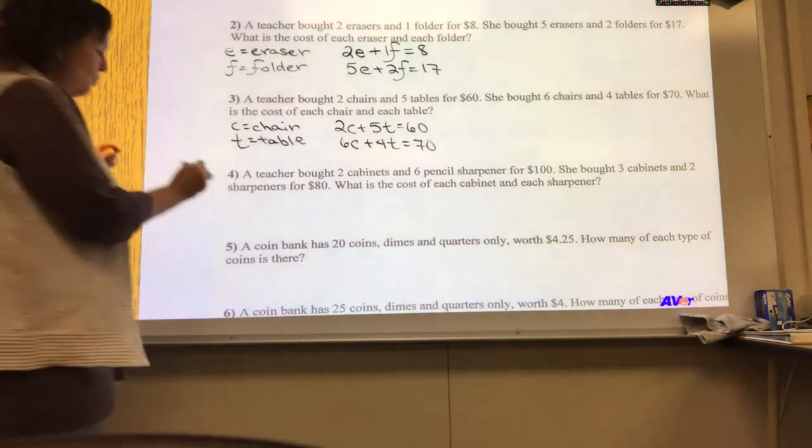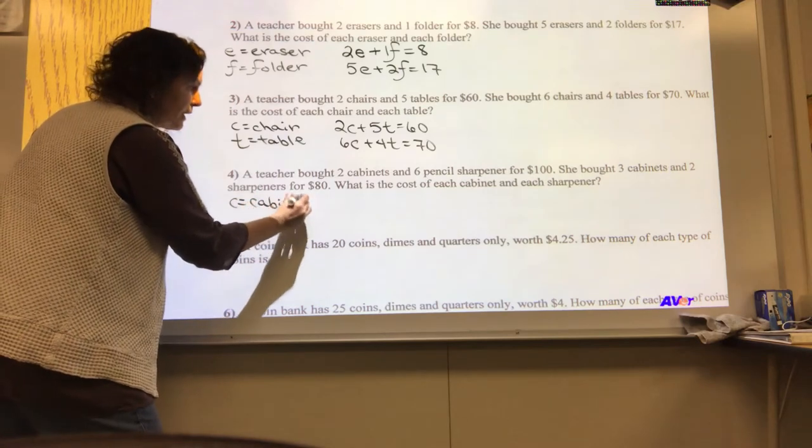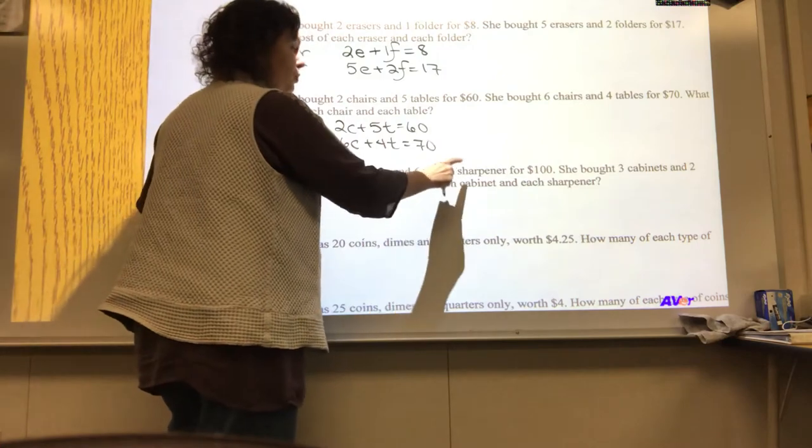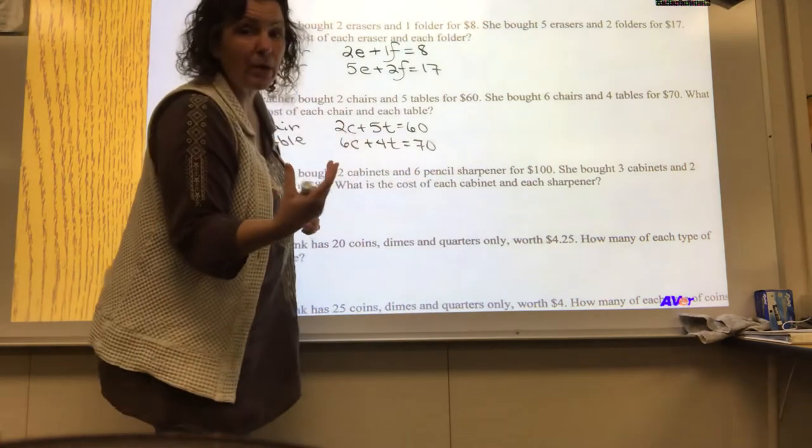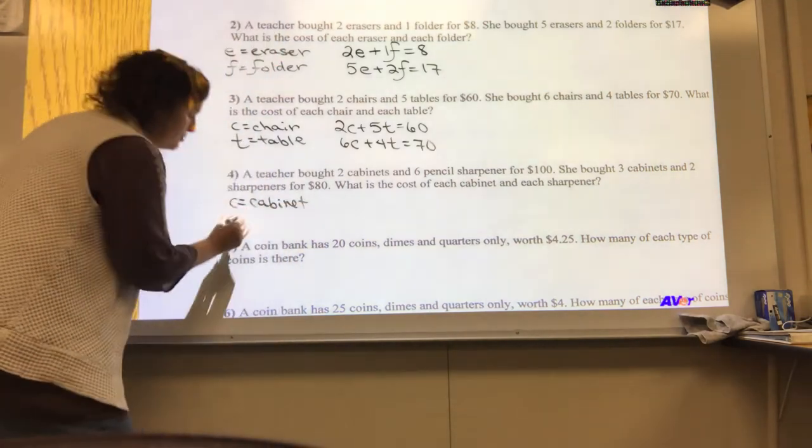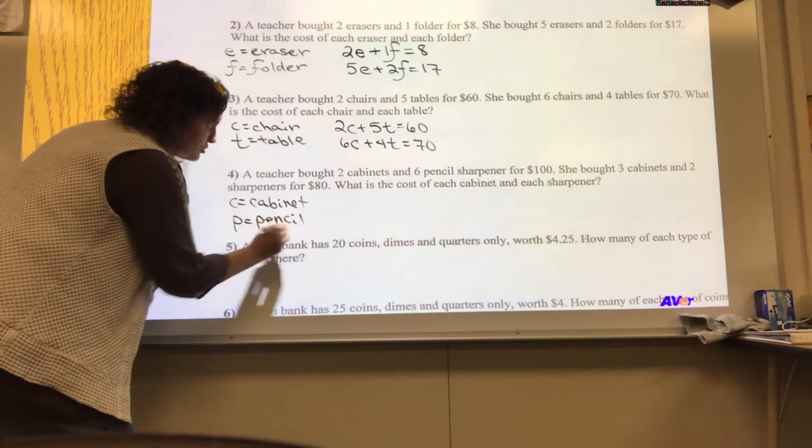And last but not least, we have C for cabinet. And we have pencil sharpener. Now you could go with P for pencil sharpener or S. Personally, I avoid S's because they look like fives after a while when you're doing math. And we want to avoid that confusion. So I'm going to go with P for pencil sharpener.